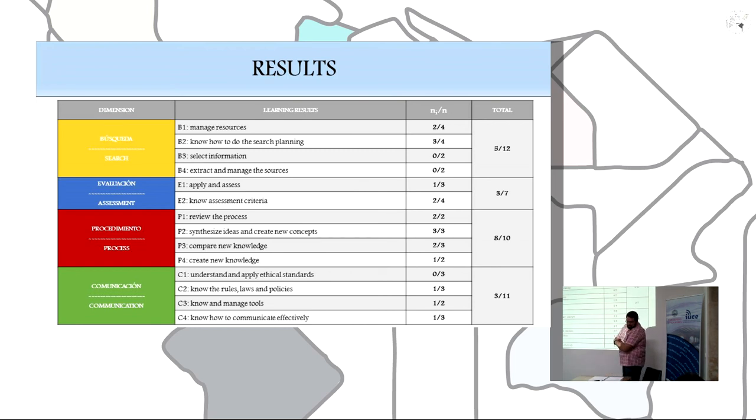Regarding the results obtained in phase 4, we can see the table of frequency of standard selection. In search, 5 of 12 possible standards, 3 of 7 in evaluation, 8 of 10 in process, and finally 3 of 11 in communication.